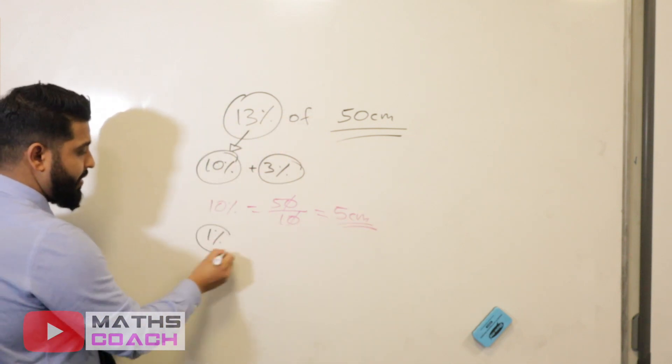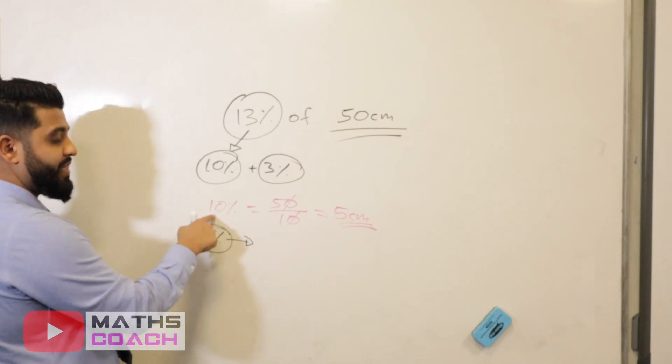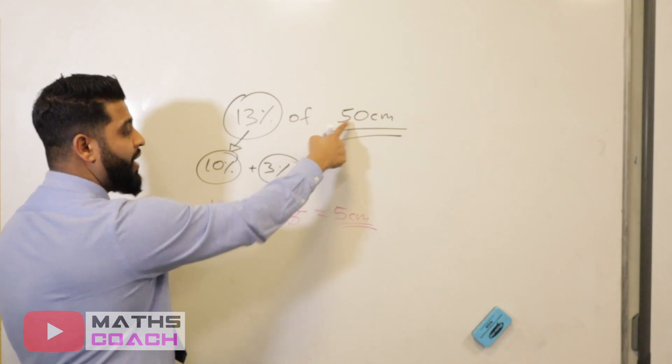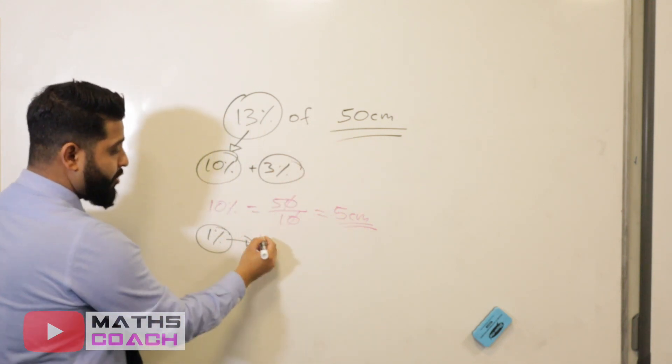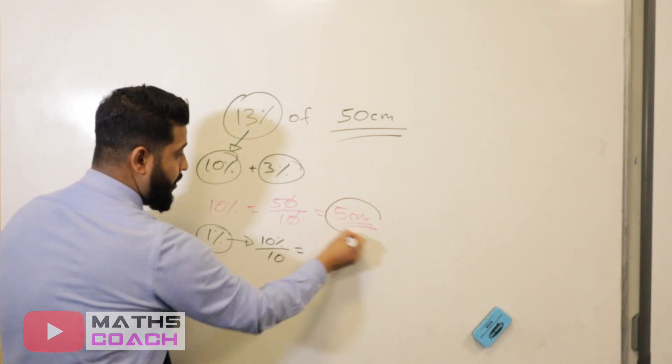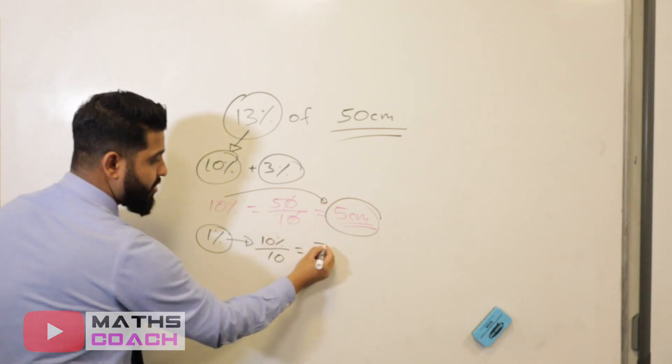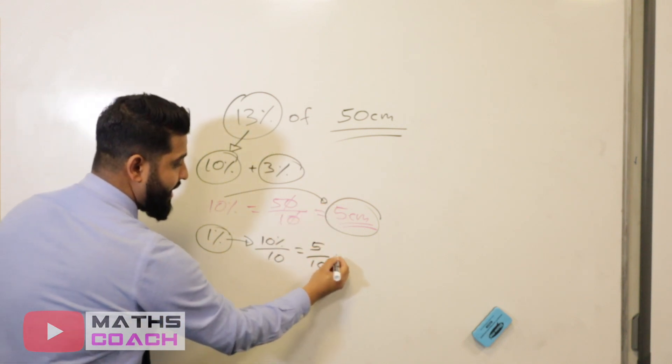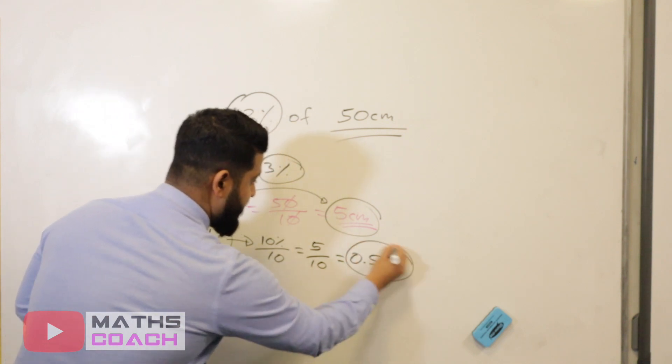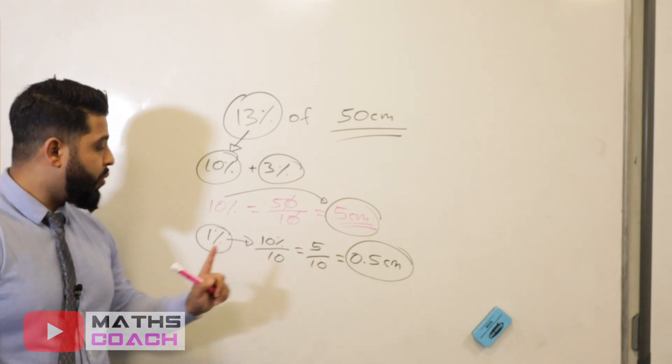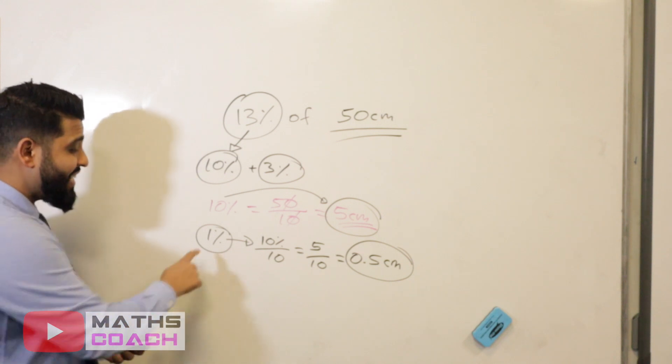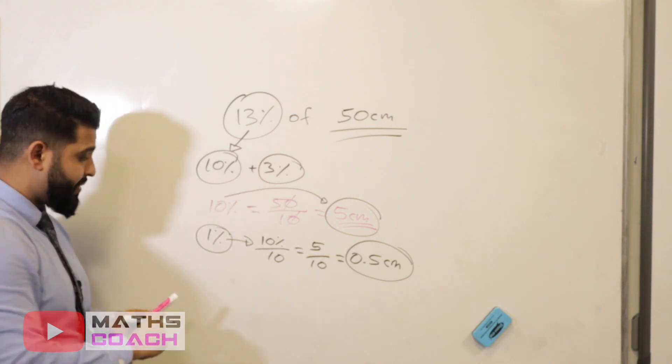Now, how do we find 1%? We can either take that 10% amount and divide it by 10, or we can go back to the original 100% amount and divide by 100. It's probably easier to take the 10% amount and then divide it by 10. So the 10% amount we know is 5 centimeters. So you do 5 divided by 10, and that gives us 0.5 centimeters.